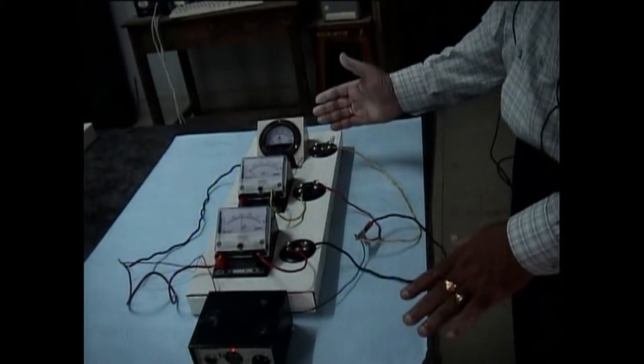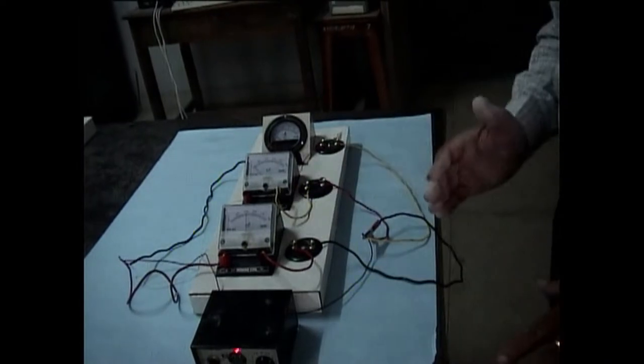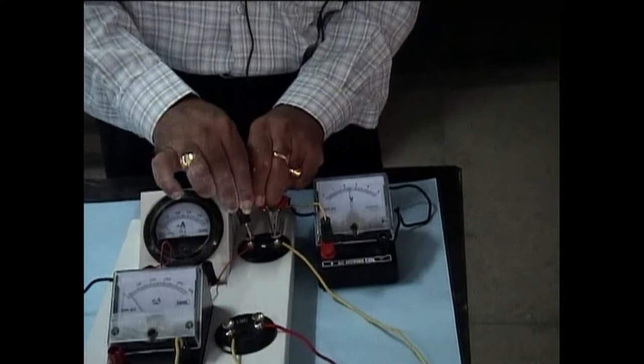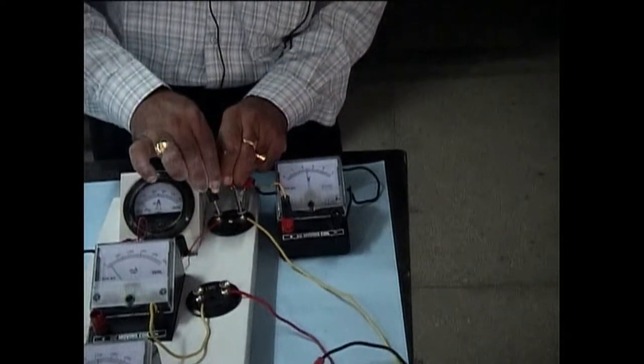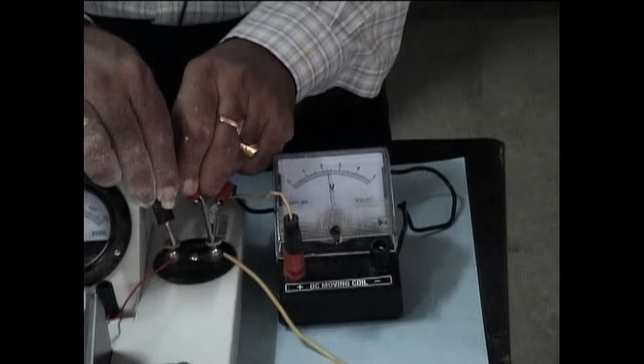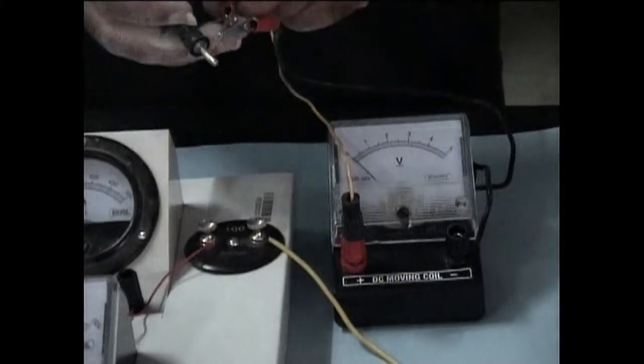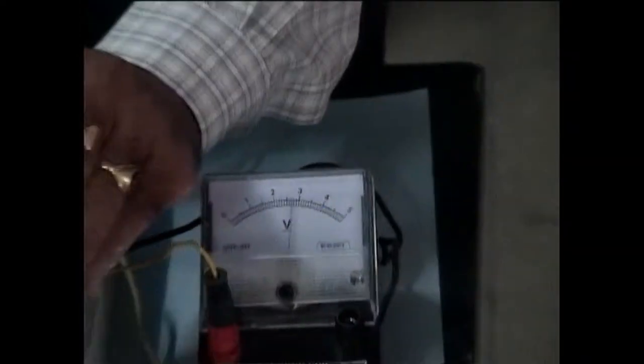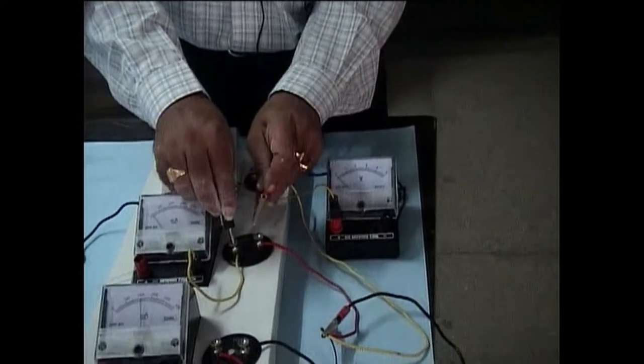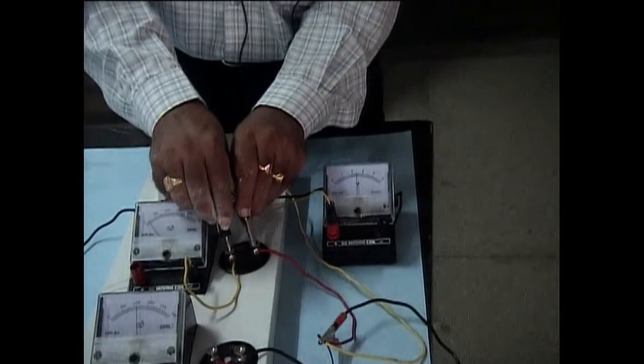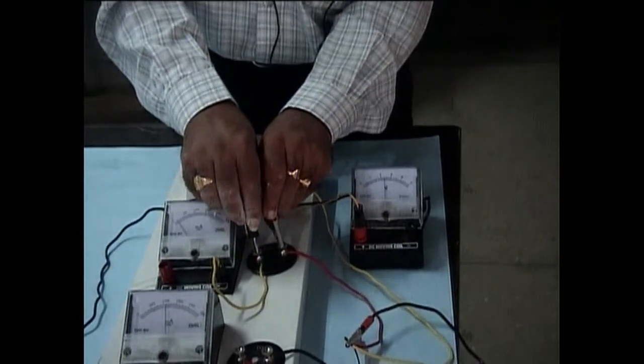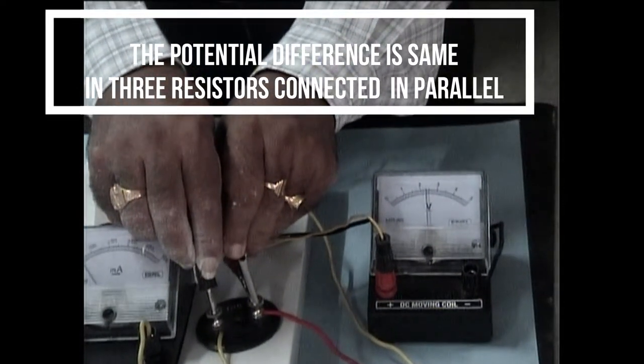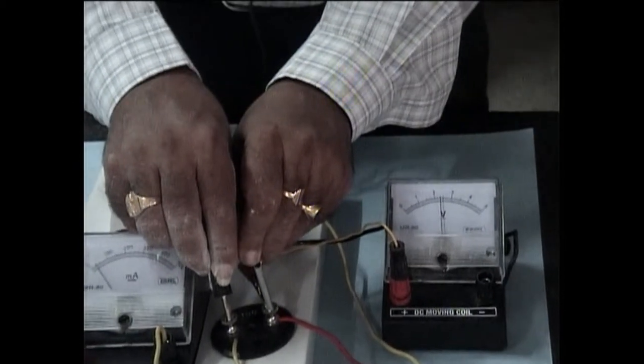Now you can observe the voltmeter reading across the first resistor is 2.3. In parallel, the voltage across each and every resistor must be same, because all the three resistors are connected across the same battery only. You can observe the same voltage is again observed across the second resistor also.